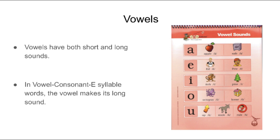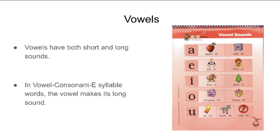Instead of E saying 'e - ed - e,' it would say 'E - Pete - E.' Instead of I saying 'i - itch - i,' it would say 'I - pine - I.' Instead of O saying 'o - octopus - o,' it would say 'O - home - O.' U can be a little bit trickier because it has two sounds in its long vowel form. It can say 'U - mule - U' or 'U - rule - U.'